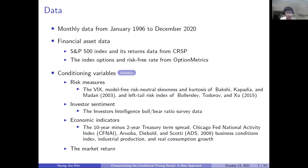For my main analysis, I use monthly data from 1996 to 2020, and I obtain S&P 500 index and its returns data from CRSP, the index options, and the risk-free rate from OptionMetrics. I use in total 11 candidate conditioning variables for risk measures, including the VIX, one investor sentiment, five economic indicators including the treasury term spread, and the market return.